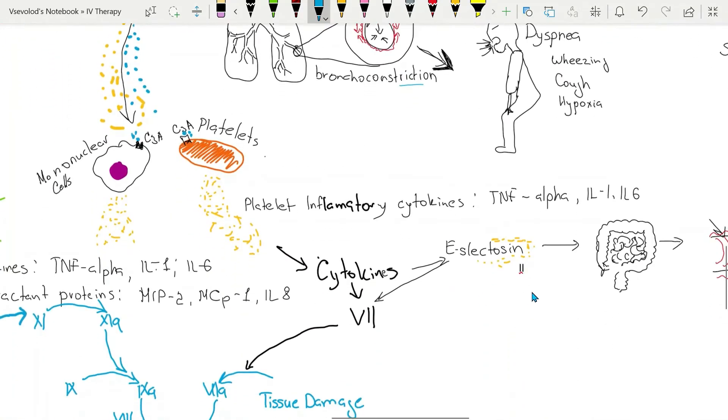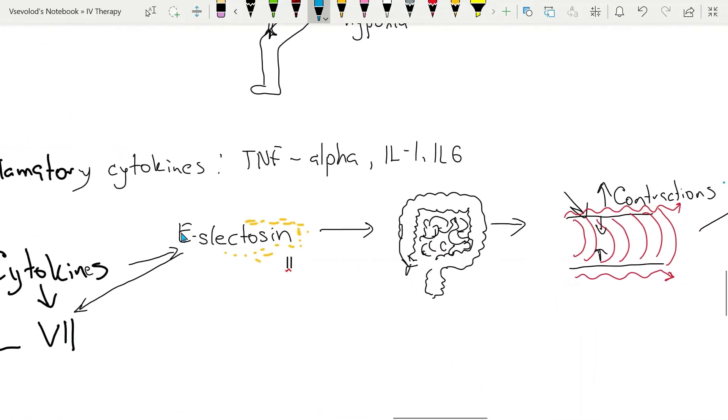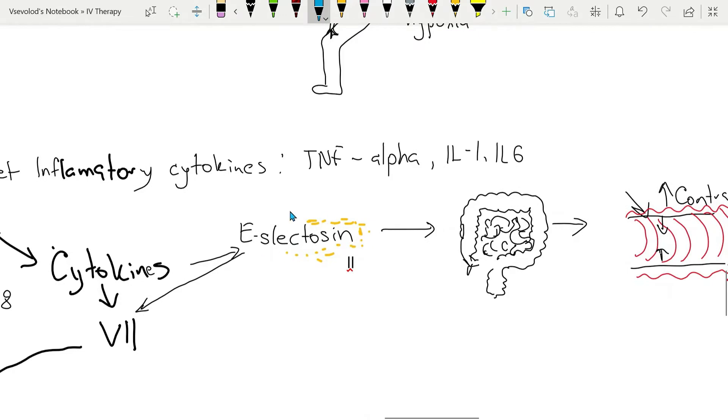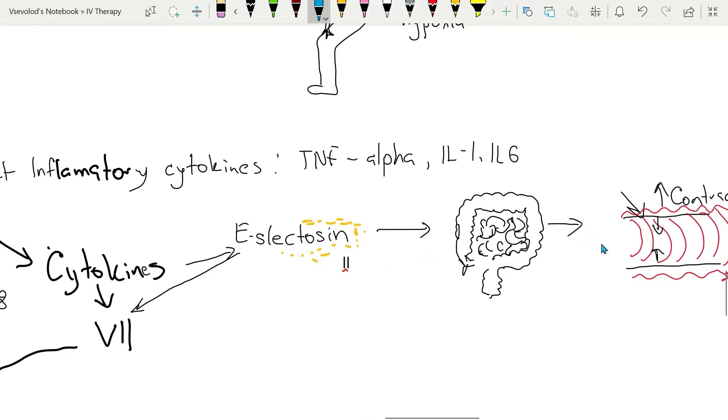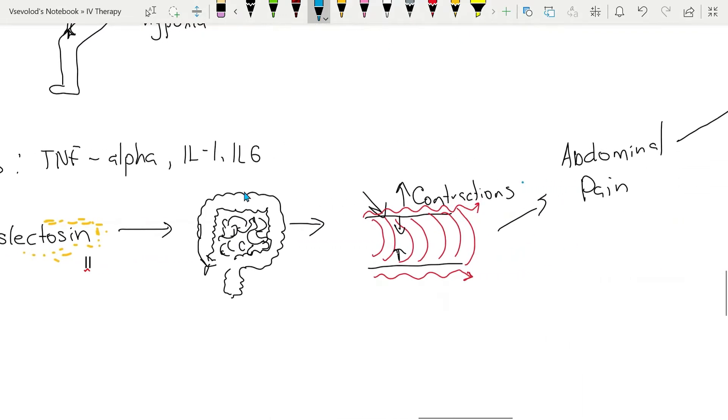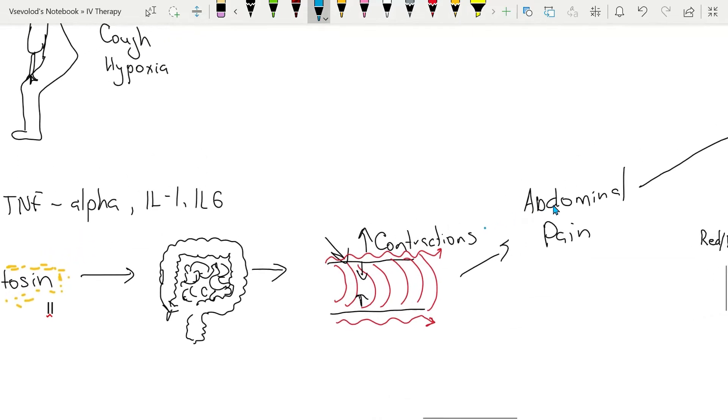E-selectin is one of the cytokines which connects to smooth muscle cells in the GI tract. It will cause increased peristalsis. Increased peristalsis will lead to diarrhea and abdominal pain.